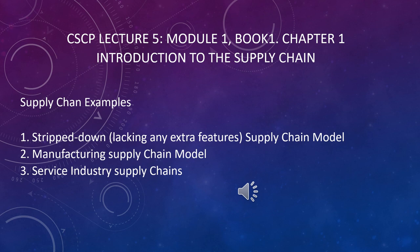Today we study the supply chain examples. There are three supply chain examples we look into. Number one is stripped down — that is the very basic model of the supply chain. Then we go for the manufacturing supply chain, then the service industry supply chain.